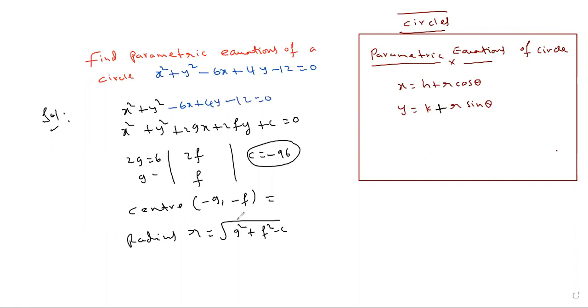Compare the coefficients: 2g = -6, so g = -3. 2f = 4, so f = 2. Then what is c? c = -12.